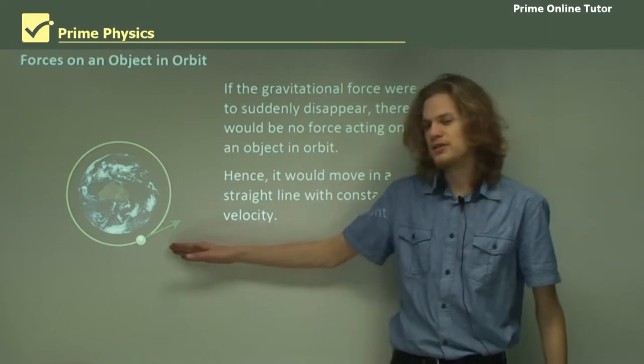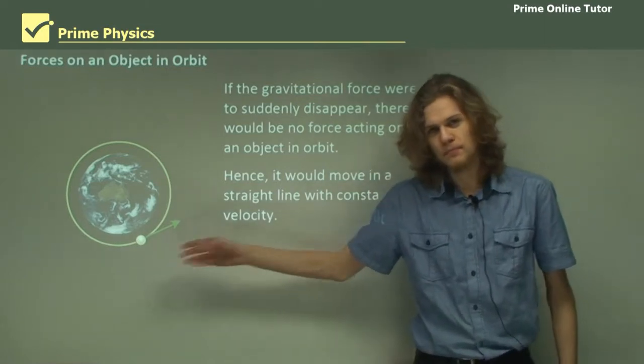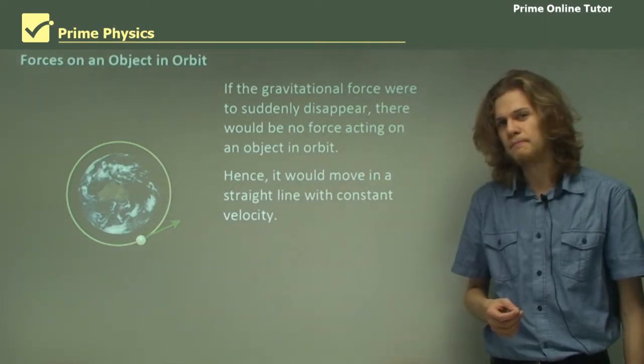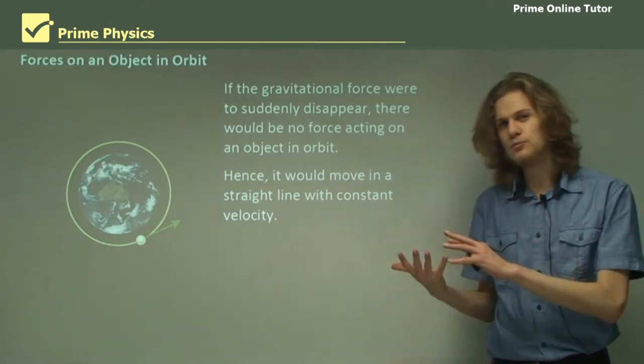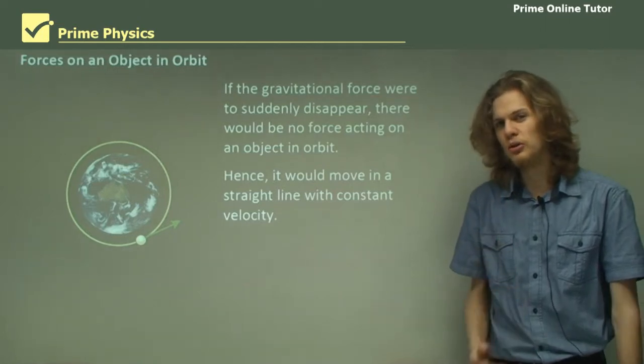So this arrow represents the velocity of the orbiting object. It will always be pointing in the direction in which the satellite is moving. So it will always be changing when it's in orbit.